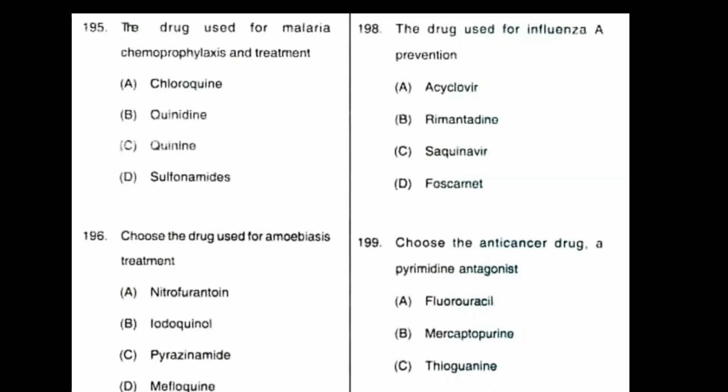Question number 195: the drug used for malaria chemoprophylaxis and treatment is? Option A: chloroquine, B: quinidine, C: quinine, D: sulfonamides. The correct answer is option A, chloroquine.